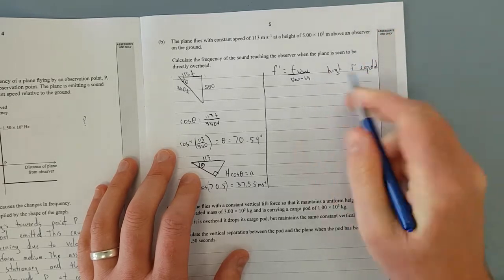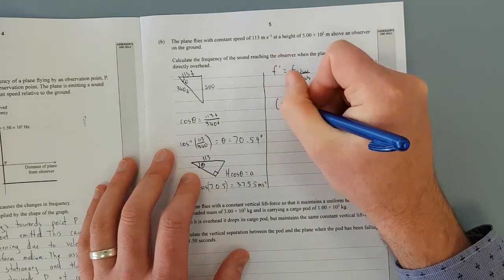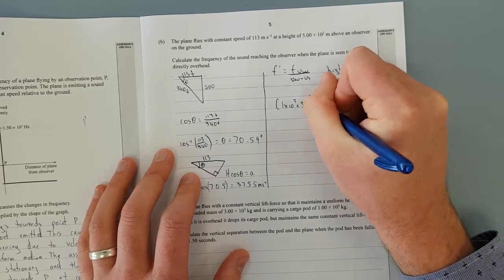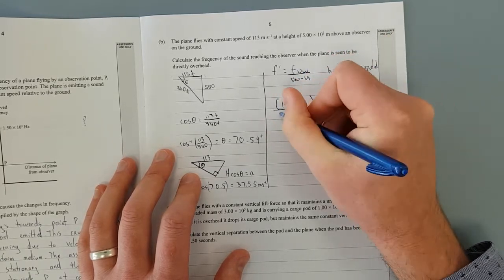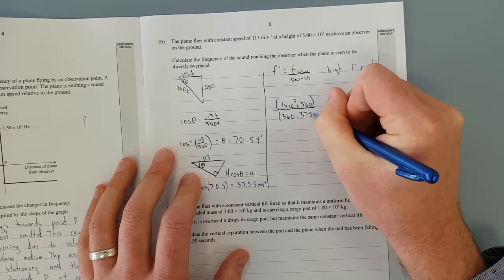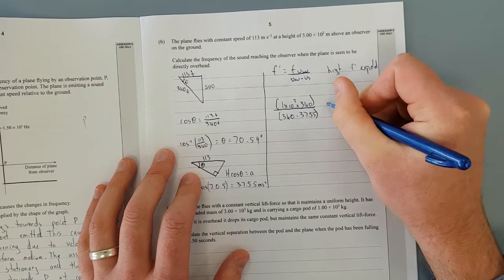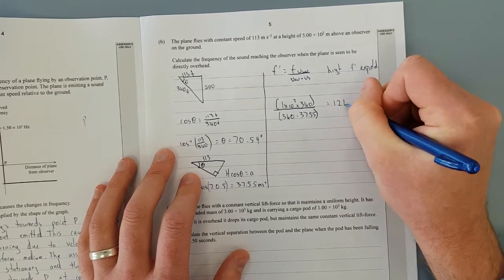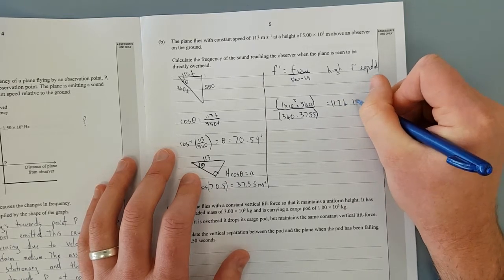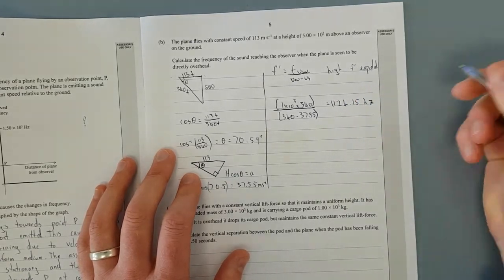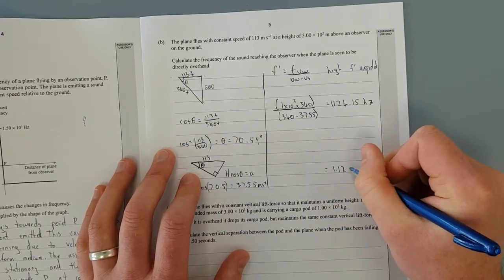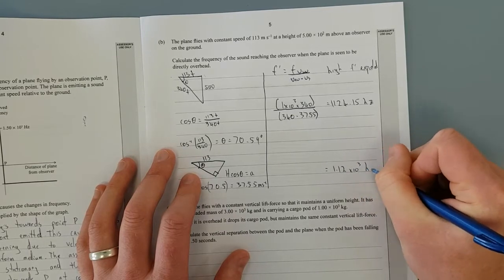Just because we know it should be higher and now it's just simply plug and chug. So 1 times 10 to the 3 times 340 divided by 340 minus 37.55, that's the speed of the source. That'll give us 1241.15 hertz which is equal to 1.12 times 10 to the 3 hertz, 3SF again.